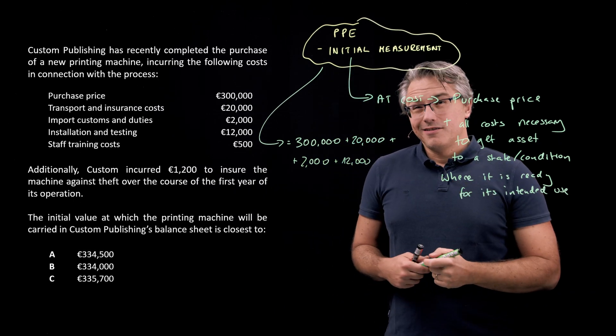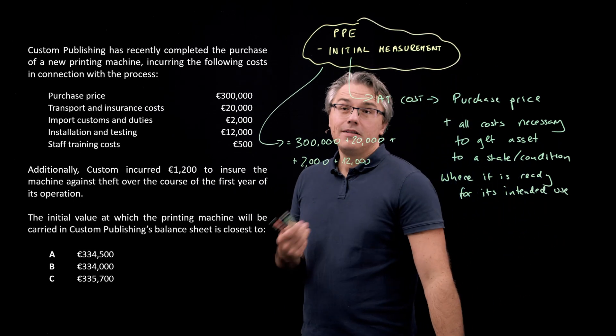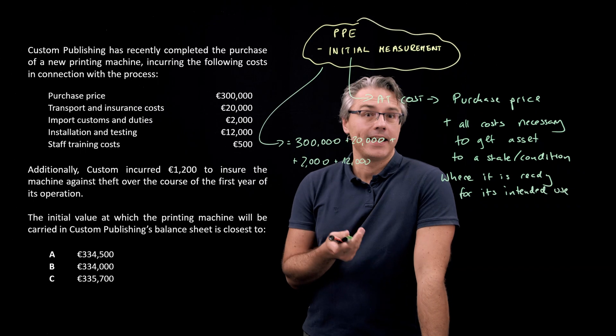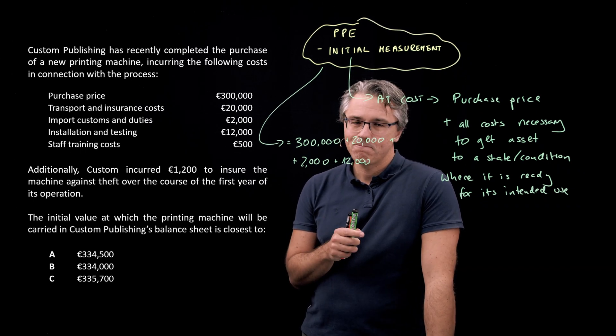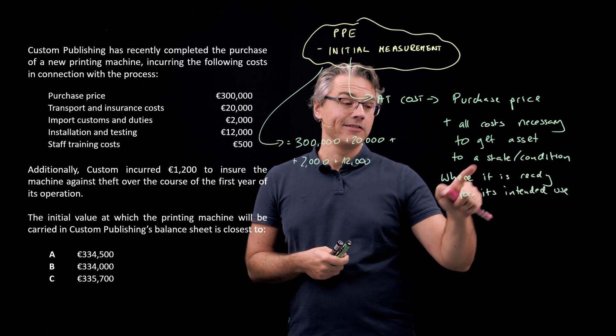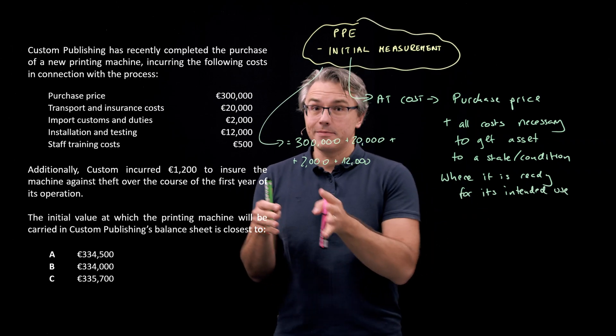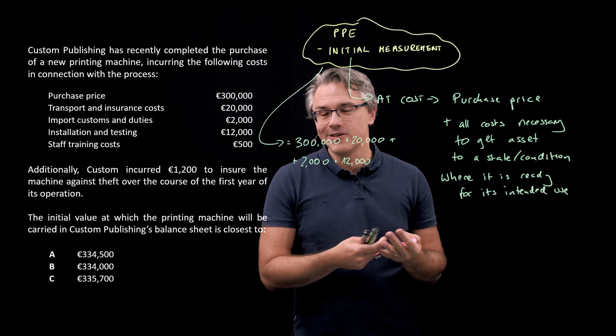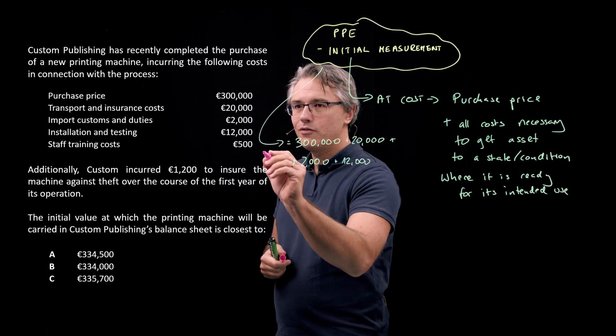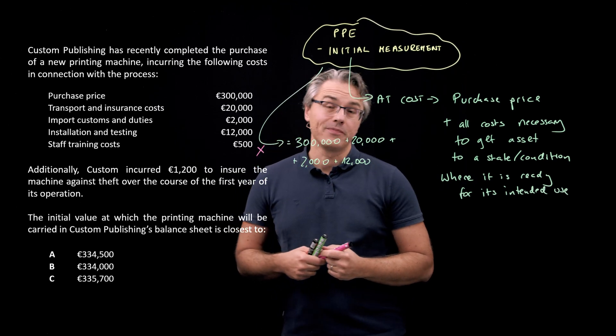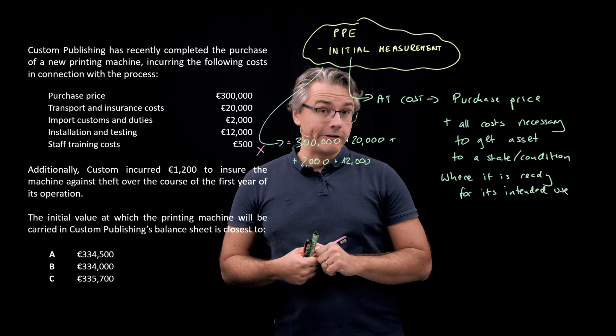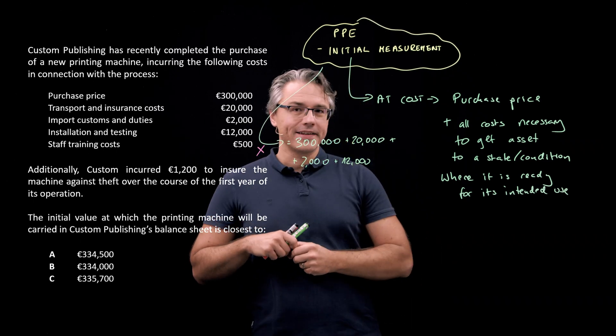Now, the next item is going to be problematic. You typically need to train staff in order for them to be able to operate the asset properly. However, training the staff is not about getting the asset to a state or condition where it is ready for its intended use. It's about getting the people into a state or condition where they are ready to use the asset, which is why staff training costs will not be included in the initial value of property, plant and equipment, which may seem counterintuitive.